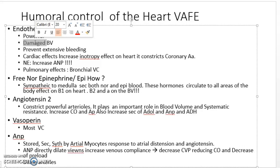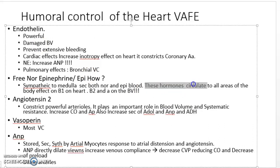Free norepinephrine and epinephrine bind to beta-1 adrenergic receptors in the heart and beta-1 and beta-2 receptors on vessels. These hormones circulate to all areas of the body. They are released from the sympathoadrenal medulla, causing release of norepinephrine and epinephrine into the blood.